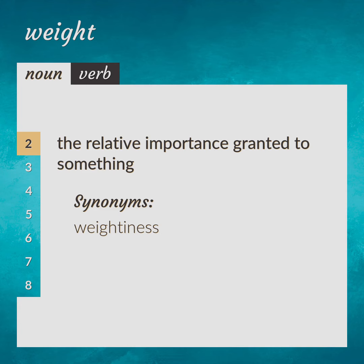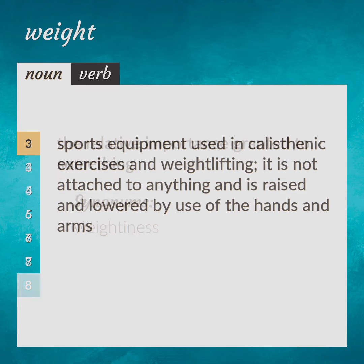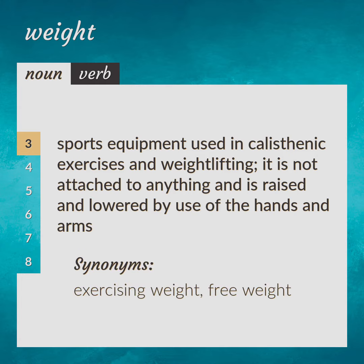Weightiness. Sports equipment used in calisthenic exercises and weightlifting. It is not attached to anything and is raised and lowered by use of the hands and arms. Exercising Weight — Free Weight.